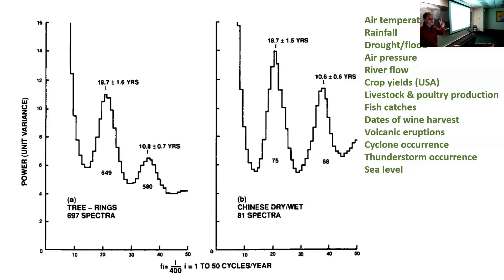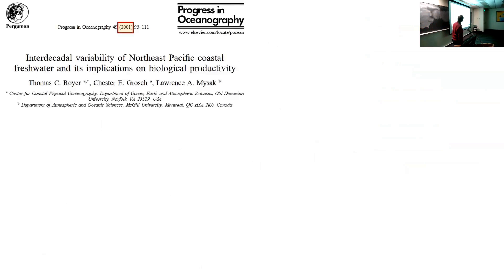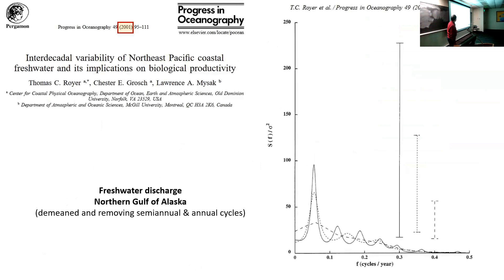He finds these two periodicities in data of air temperature, rainfall, drought, and flooding diseases in China, atmospheric pressure, river flow, crop yields, livestock and poultry production, fish catching, dates of wine harvest, volcanic eruptions, cyclone occurrence, thunderstorm occurrence. He is able to identify these two periodicities. The variance of the signals explained is maybe 20 to 30 percent only. But that's only those two periodicities.